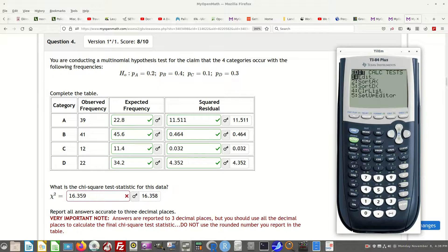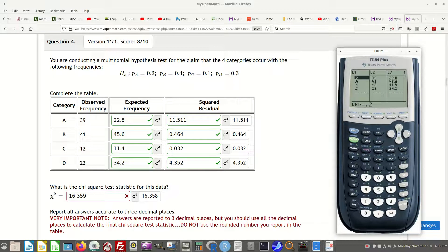I went first into stat, and I loaded the data using fit test. So in L1, I loaded the probability: 0.2 for the probability of A, 0.4, 0.1, and 0.3.